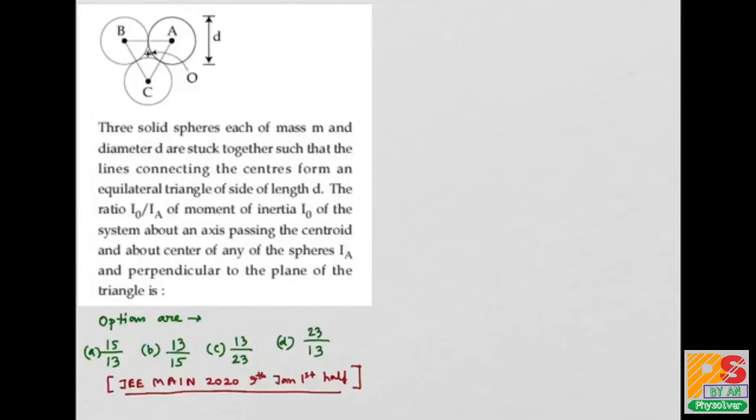Now, we all know moment of inertia of a solid sphere about its diameter is given by 2/5 MR squared, where M is the mass of the sphere and R is the radius. In this case it is 2/5 small m, and diameter is D, therefore radius is D/2, so this is MD squared divided by 10. This is the moment of inertia of each sphere about its diameter.